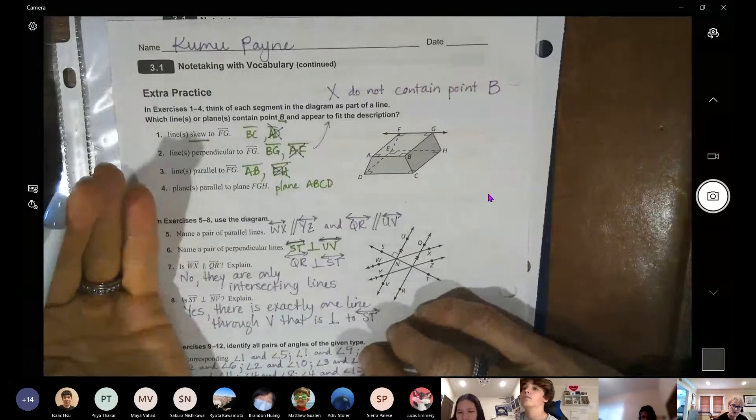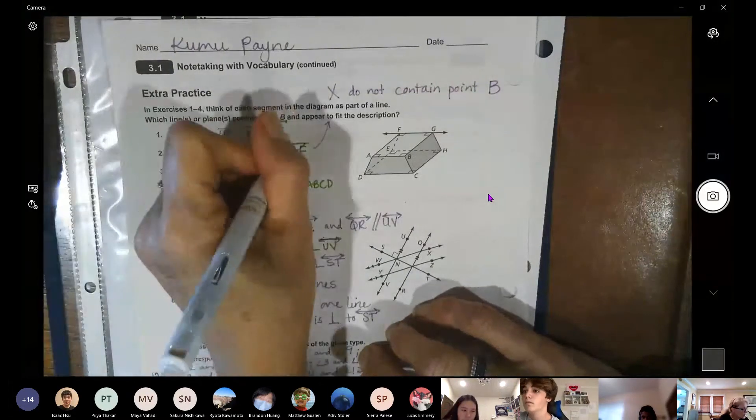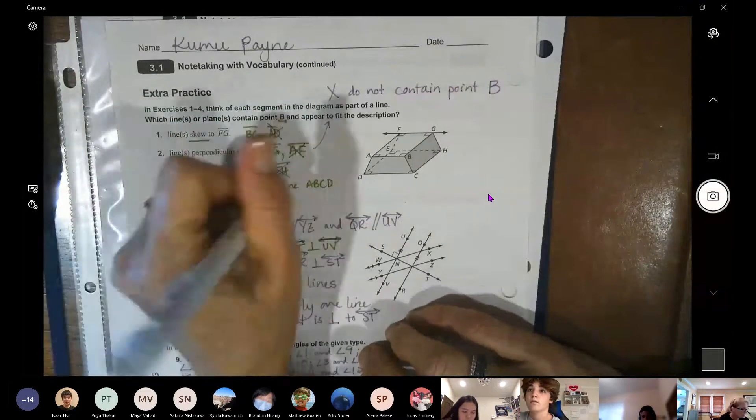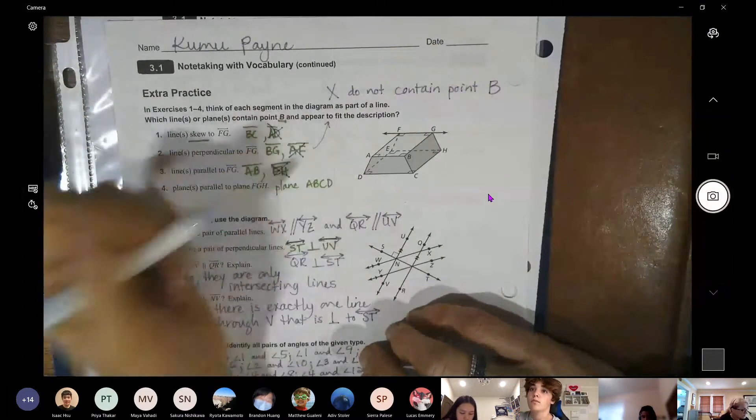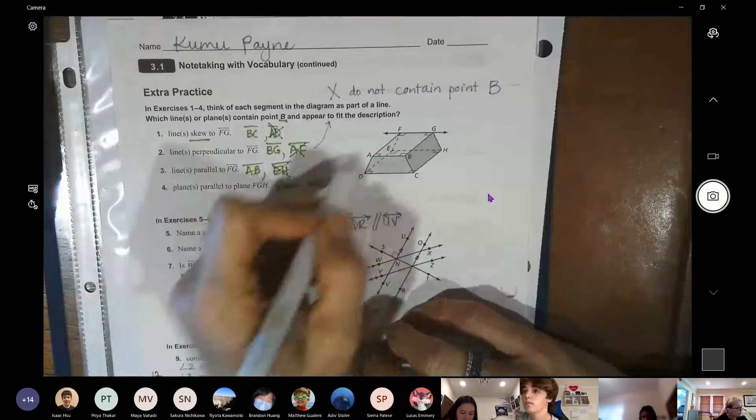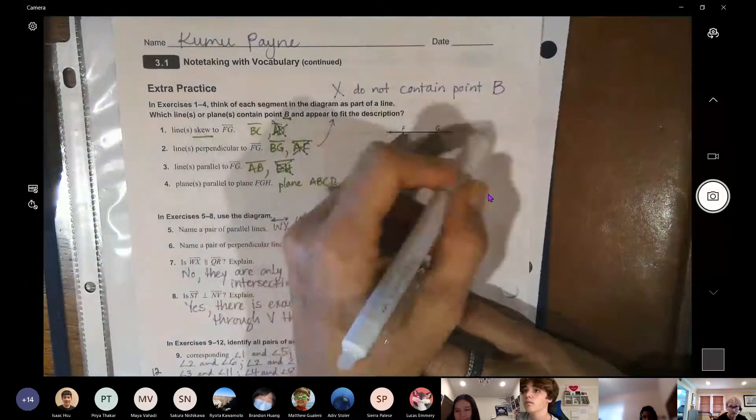So then I came back to my work and I said, well, you know what, AD does not. So I crossed that out. AF doesn't have a B in it. EH doesn't have a B in it. And then I wrote a note to myself: these don't contain B.